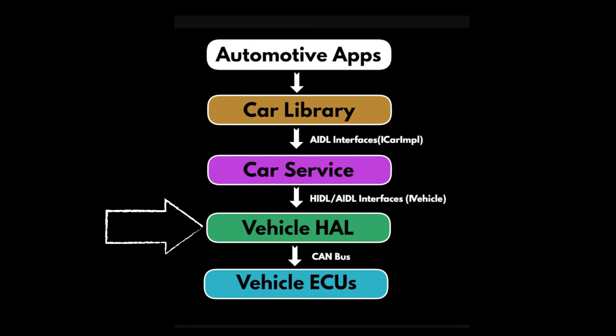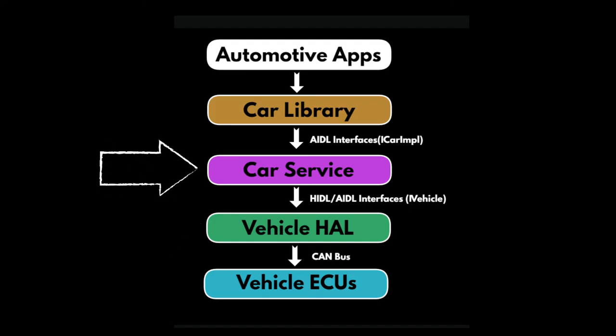The vehicle HAL stores information as vehicle properties which are extracted from the ECUs. Almost all the properties are linked to the signals received from the ECUs. Car service is a system service started by the system server during Android boot-up. Car service can persist the state and provide APIs to the car library. It works as a mediator between the vehicle HAL and the car library. The car service is in fact a collection of services. If we look at the iCar implementation, we could find all these services. We will discuss in detail how it is started when we do the code walkthrough.